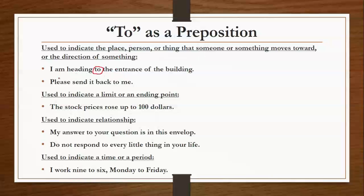'Please send it back to me.' जब भी हम किसी person, place, या thing को indicate करते हैं — यहाँ पर हम एक person की बात कर रहे हैं, कि मुझे वो चीज वापस कर दो — 'to me' — इसलिए हमने यहाँ पर भी 'to' का use किया है।